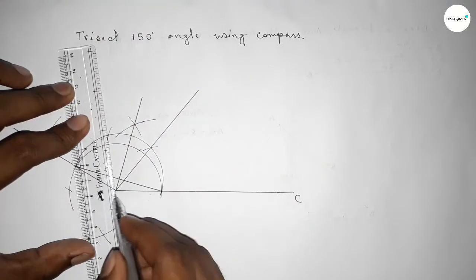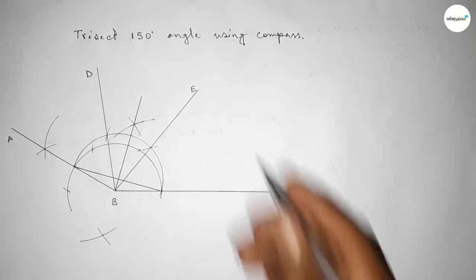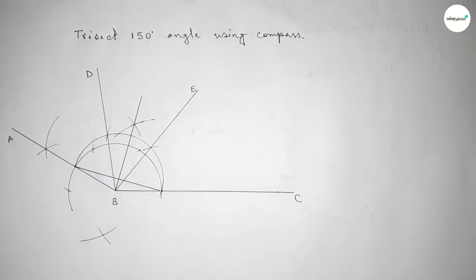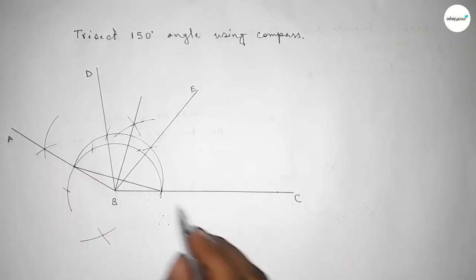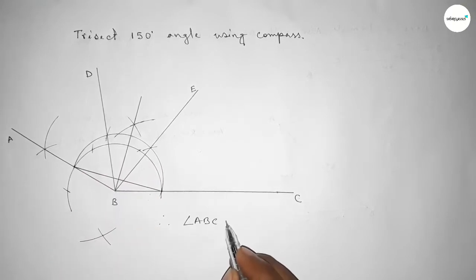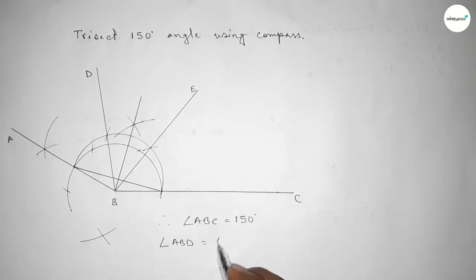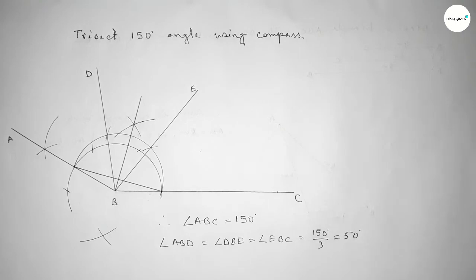Joining this line to trisect the angle, taking here point D and point A. Checking the angles: this is 50 degrees, 100 degrees, and 150 degrees. Therefore angle ABC equals 150 degrees. Angle ABD equals angle DBE equals angle EBC equals 150 divided by 3, which equals 50 degrees each.